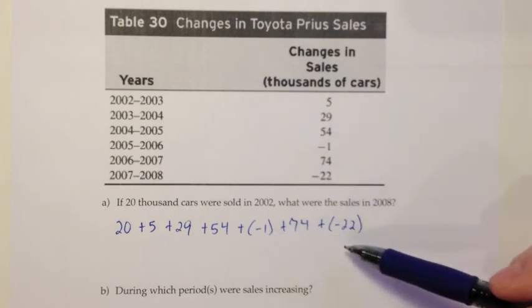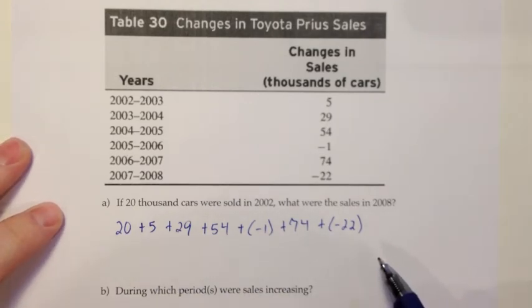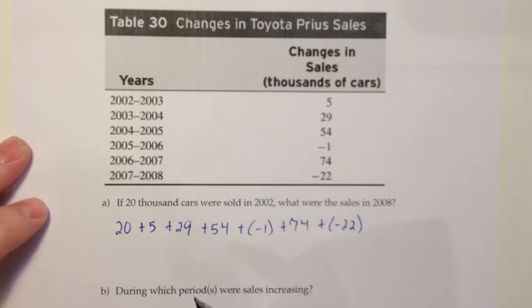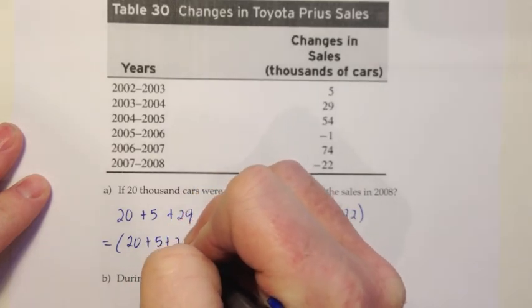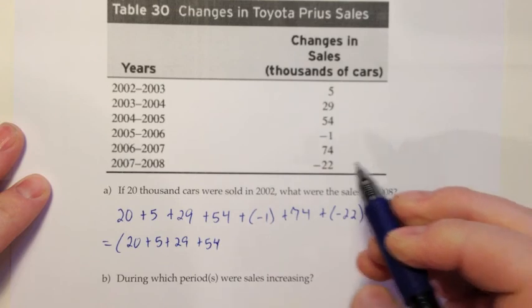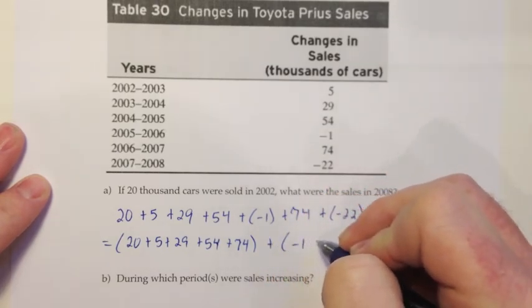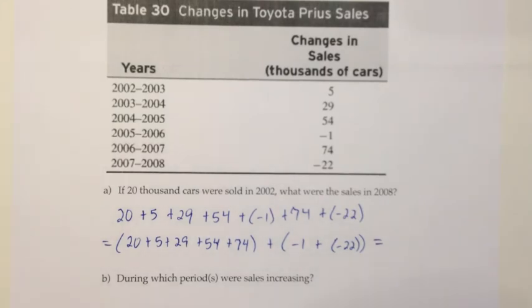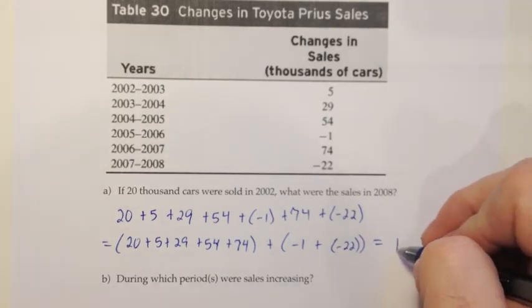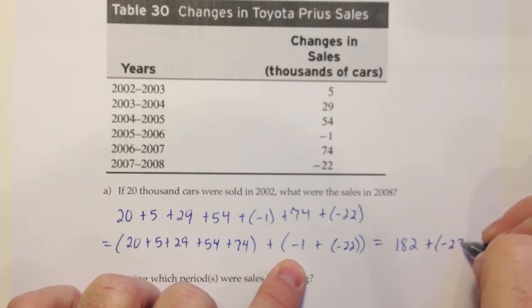And then we want to go ahead and combine all these together. So you could just work from left to right on this. That would be totally fine. Another common thing that people do is work all the positives together and the negatives together, and then combine those two. And I'm going to go ahead and choose that path. So I'm going to say our positives are 20, plus 5, 29, plus 54, and then plus 74. And then our negative numbers would be the negative 1, and also the negative 22. And for all these positives, I'm just going to cheat a little and use my calculator there. So if you add all those up, you get 182. And I'll do this part in my head. They're both negative, so you add them together, that would be 23. But they're both negative, so it stays negative, so that would be negative 23. And then when you're doing opposite signs, that's really a subtraction. So I want to do 182 minus 23, which is 159. And the bigger number was positive, so it would be 159.